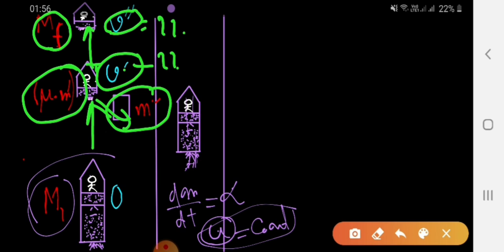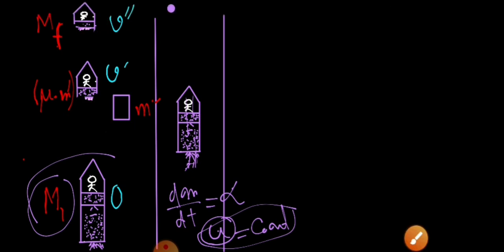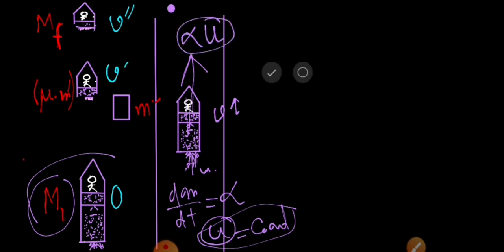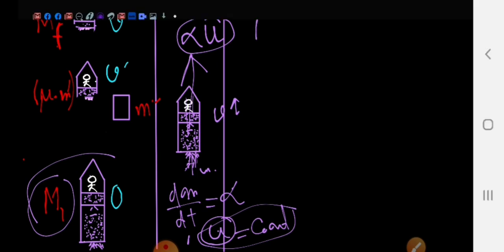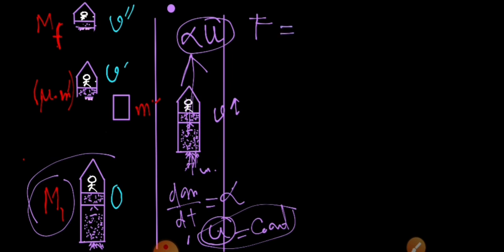Let's draw the free body diagram. At any time t, the body is moving with velocity v and fuel is coming out with speed u relative to the rocket, so there is a thrust on the rocket. The thrust equals dm/dt times the relative speed of the burned fuel, which is alpha times u — both constant quantities. The question says to neglect gravitational force, so thrust is the only force acting.